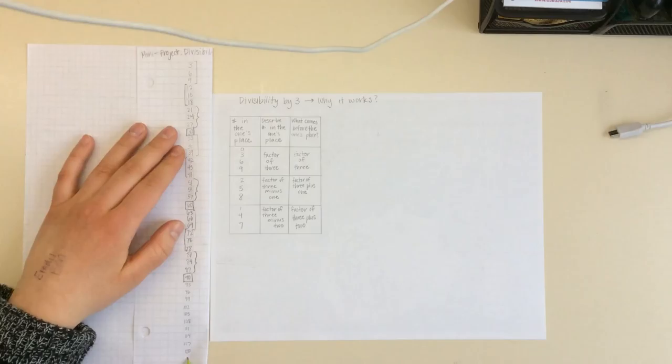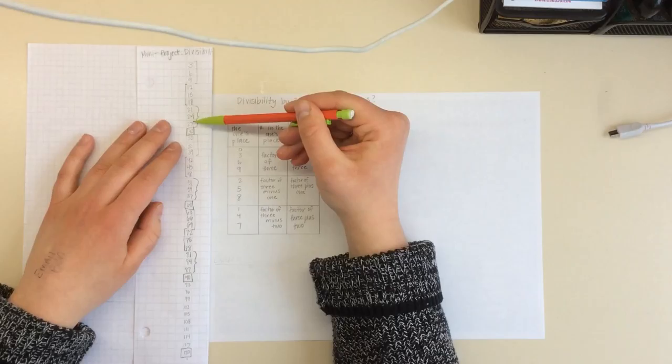Hi everyone, so today we're going to be talking about why the divisibility by 3 trick works. So first what I did is I wrote out all the way up to 120 numbers that are divisible by 3.